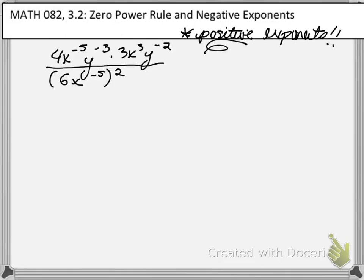Hi, everyone. This is an example from 3.2 for Math 082. We're working with the zero power rule and negative exponents. This is a problem, an example that is of the same caliber that you might see on an exam.